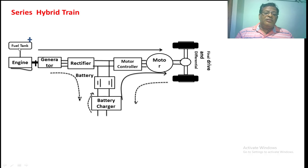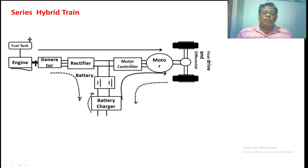From this diagram: this is the fuel tank of the IC engine, this is the IC engine, which gives a mechanical output. That mechanical output is given to the generator, which converts mechanical power into electrical output. That is rectified by means of a power electronic rectifier circuit, making DC power available. That DC power is given to the motor through the control circuit, and the same DC power is also connected to the battery charger. The motor is the propulsion motor, which gives propulsion power to the front two wheels.